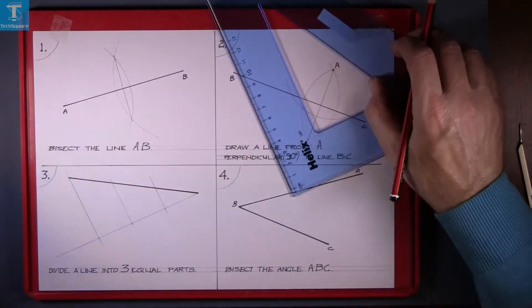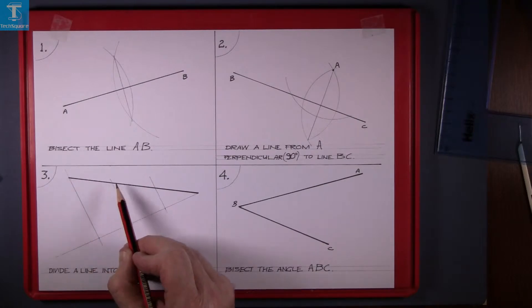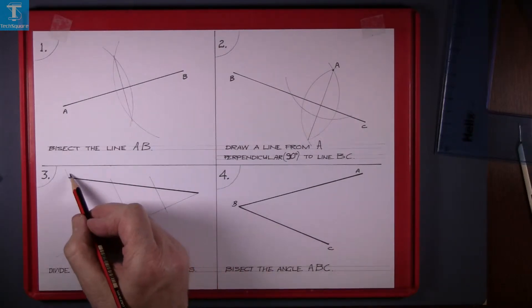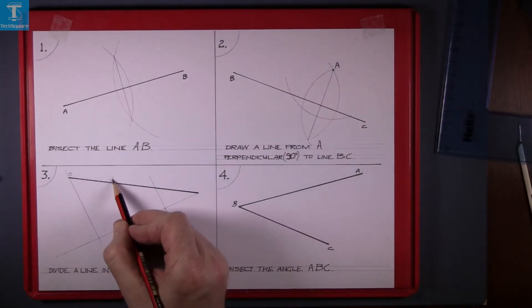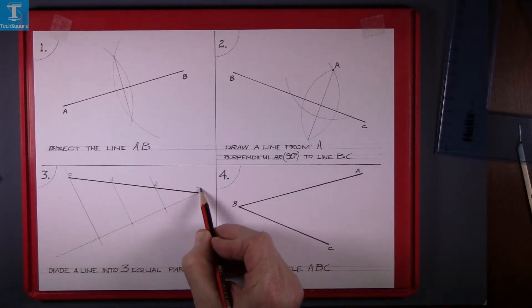And that there is your line divided up into three equal parts. So 0, 1, 2, and 3.